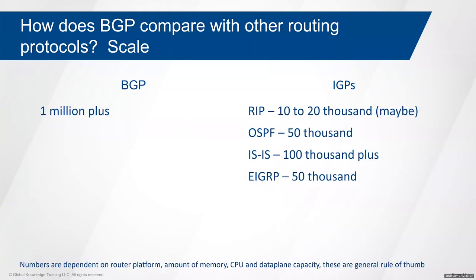Comparing scale: BGP theoretically scales to millions of routes. IS-IS scales to around 100,000 routes; OSPF and EIGRP to around 50,000; RIP maybe 10,000 — though why you'd want to is another question. These numbers depend on the platform you're running. BGP is the only protocol that can scale to internet-level numbers.